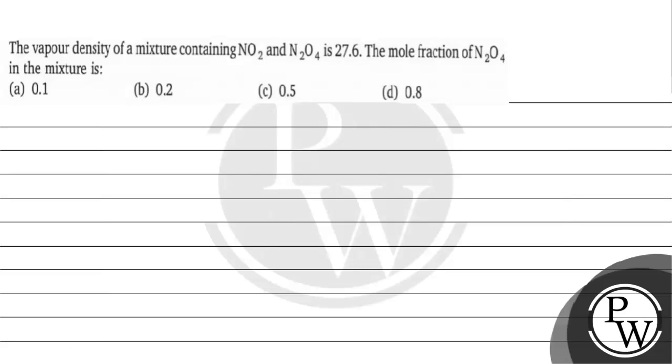Hello bacho, let's read this question. The question says vapor density of a mixture containing NO2 and N2O4 is 27.6. The mole fraction of N2O4 in the mixture is: (a) 0.1, (b) 0.2, (c) 0.5, (d) 0.8.